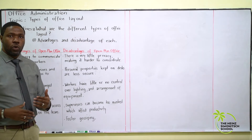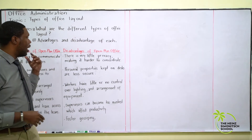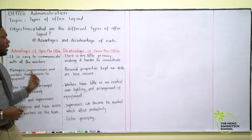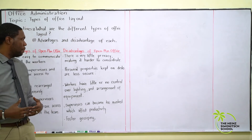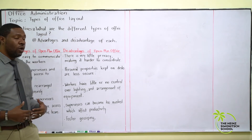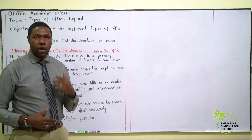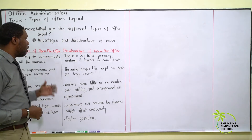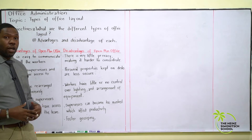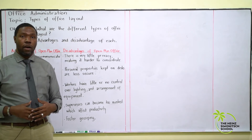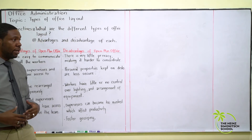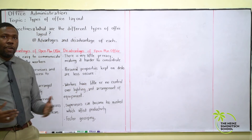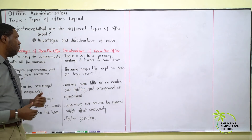Some disadvantages associated with an open plan office: there is little or no privacy, which makes it difficult for employees to concentrate on given tasks. Personal properties left on desks are unsecured, which means that everybody has access to pretty much everybody's personal belongings.